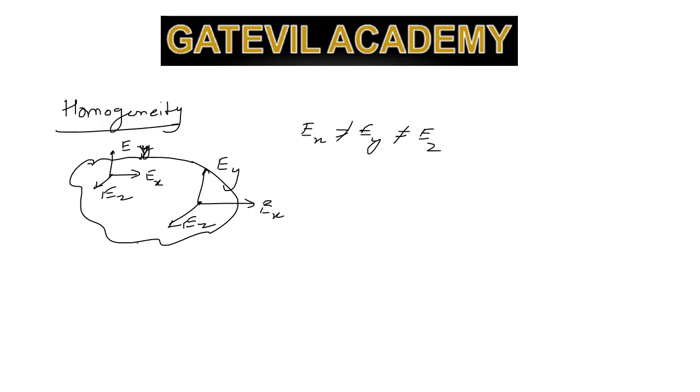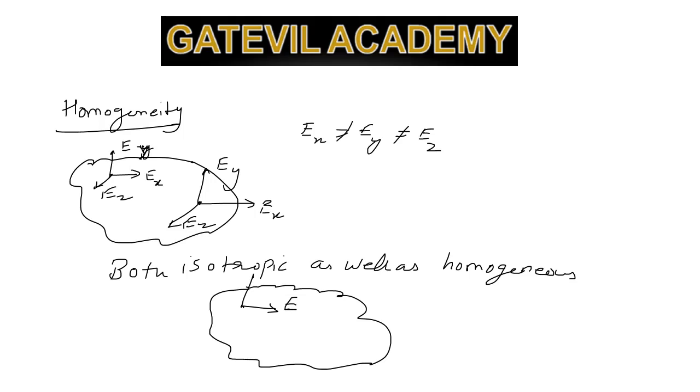If a material is both isotropic and homogeneous, then the material has the same property in every direction and at every point throughout its volume.